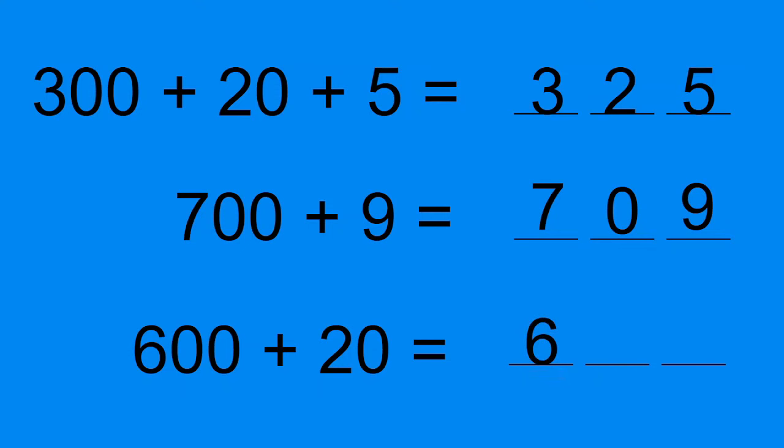We have 600 plus 20. So what number are we going to write in the tens place? Did you say 2? Well done. 20 is two groups of 10.